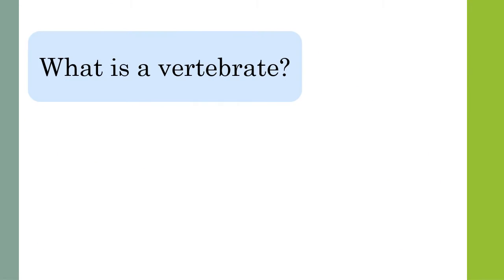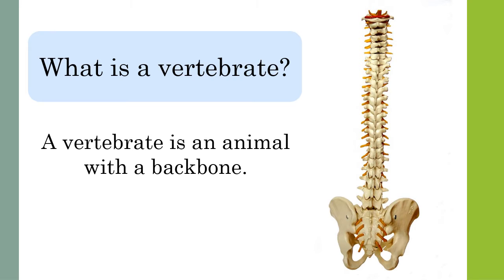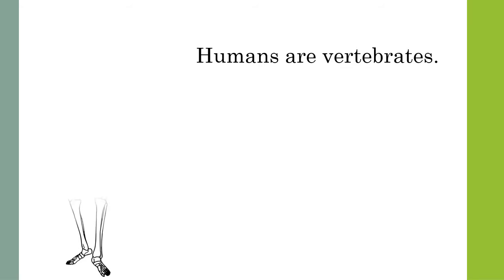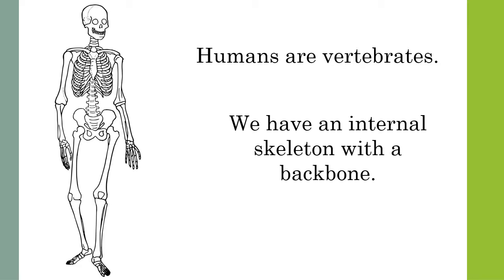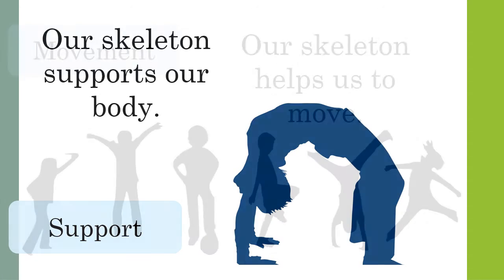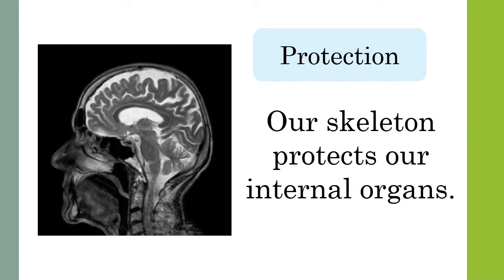What is a vertebrate? A vertebrate is an animal with a backbone. Humans are vertebrates — we have an internal skeleton with a backbone. Our skeleton supports our body and allows us to move around, and our skeleton protects our internal organs.